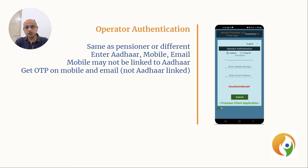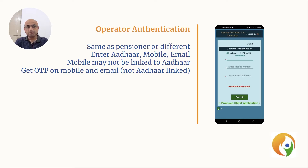The next two steps are operator authentication and pensioner authentication. Operator authentication is a one-time setup for this app. If you are trying to generate a digital life certificate for yourself, then you will be the operator as well as the pensioner. If you want to generate a life certificate for someone else like a family member, then you can be the operator, and the other person's details will be for pensioner in the next step.